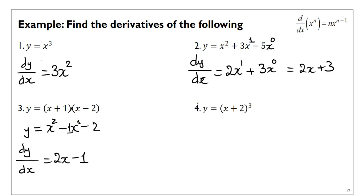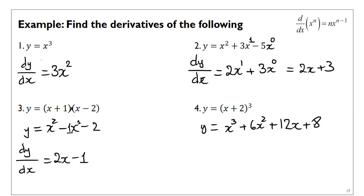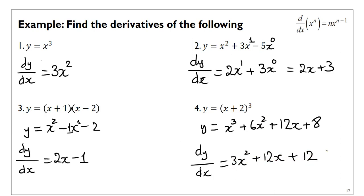Example 4. Similarly, there's a shortcut to do this but I haven't told you yet. So again, you have to expand so you have a sum of terms. Expanding gives x cubed plus 6x squared plus 12x plus 8. Then you can find the derivative: multiply by the power and reduce it. So 3x squared, then 6 times 2 gives 12x, plus 12. That's the derivative.